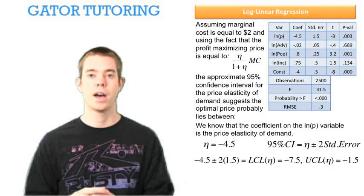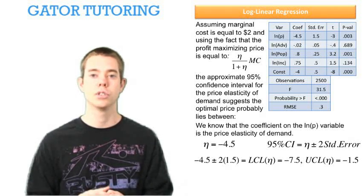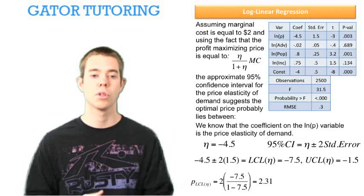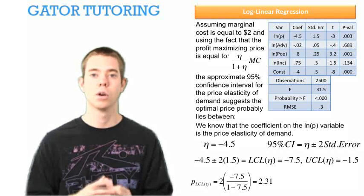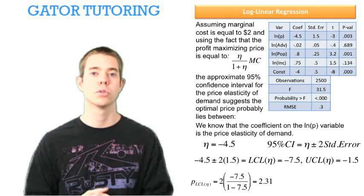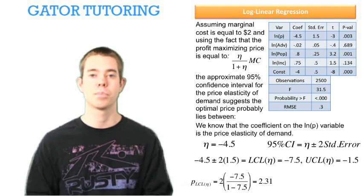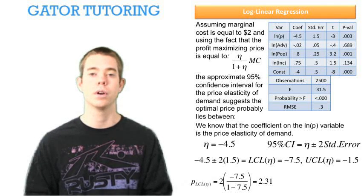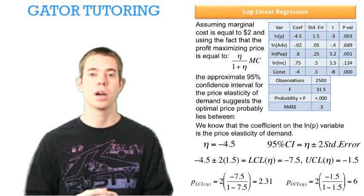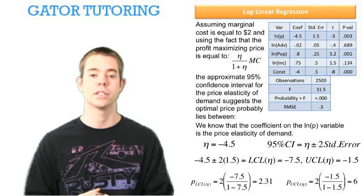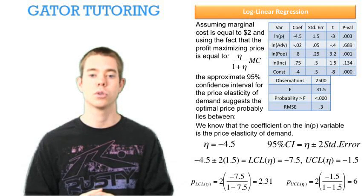So we're going to find a profit maximizing price at each of those elasticities. The profit maximizing price at the lower control limit elasticity is $2 of marginal cost times, now we're going to use our negative 7.5 for our elasticity and we find the price is equal to 2.31. The profit maximizing price at the upper control limit elasticity is again our same marginal cost but now we're using the elasticity of negative 1.5 and we find that the price of the upper control limit elasticity is $6.